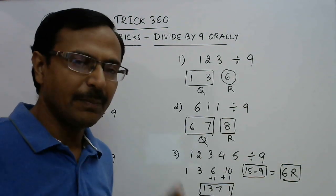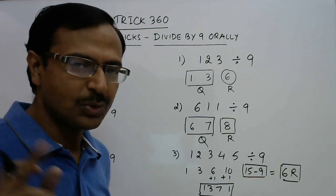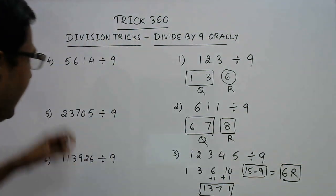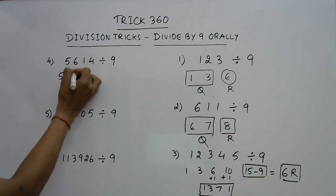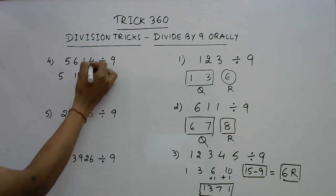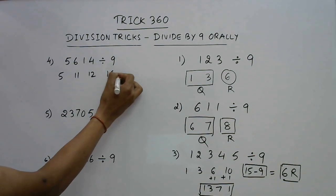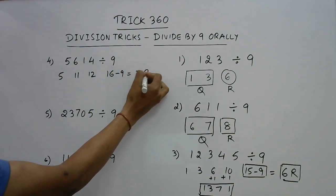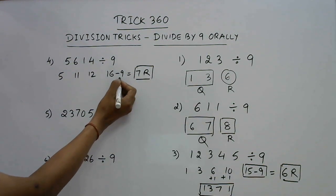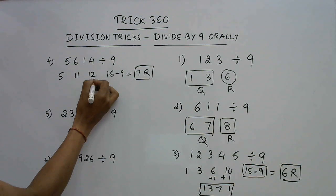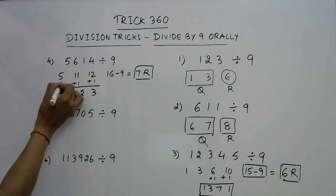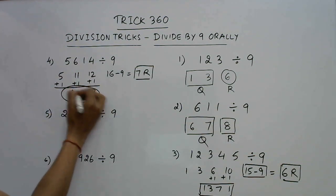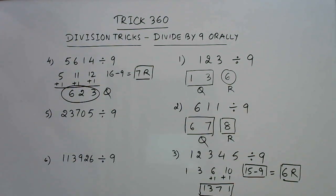Slightly difficult, but with 10 to 15 minutes of practice I am sure you will get it in no time. Let us have some more examples. Take 5614. 5 comes down; 5 plus 6 is 11; 11 plus 1 is 12; 12 plus 4 is 16. Since 16 is greater than 9, subtract 9 to get 7 as the remainder. Since we subtracted 1 multiple of 9, add 1 here. 12 plus 1 is 13 — write 3, carry 1; 11 plus 1 is 12 — write 2, carry 1; carry gives 6. So 623 is the quotient and 7 is the remainder.